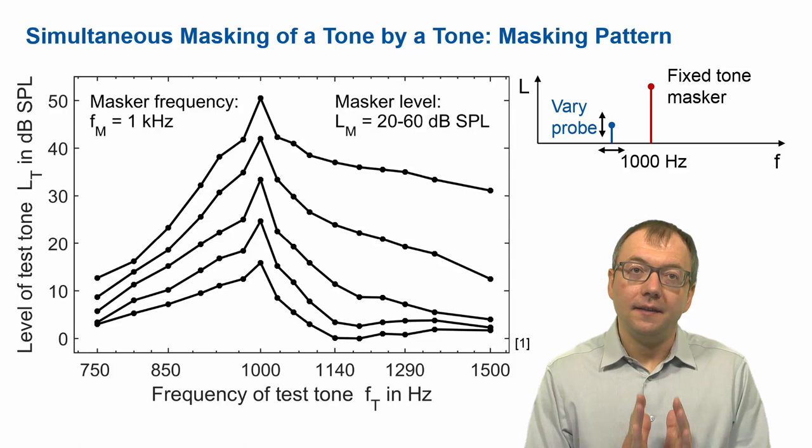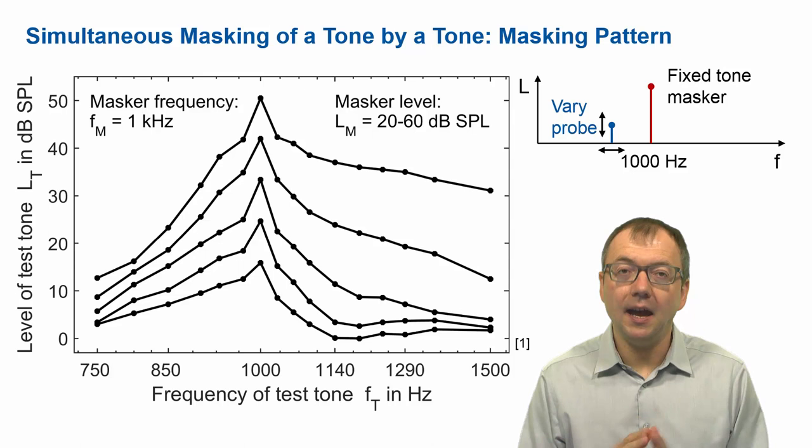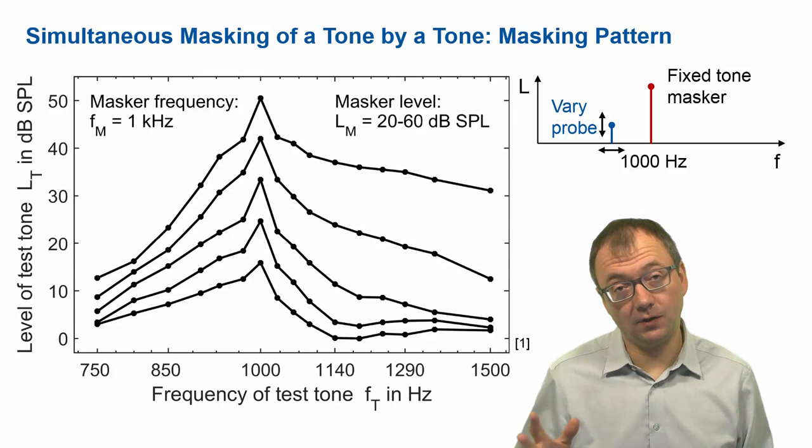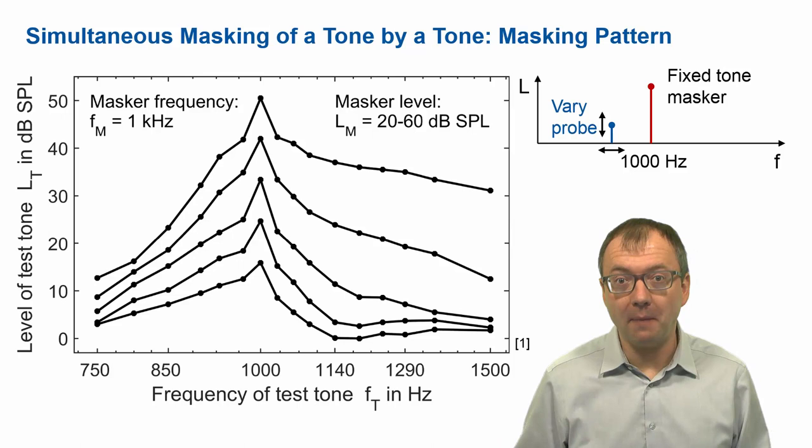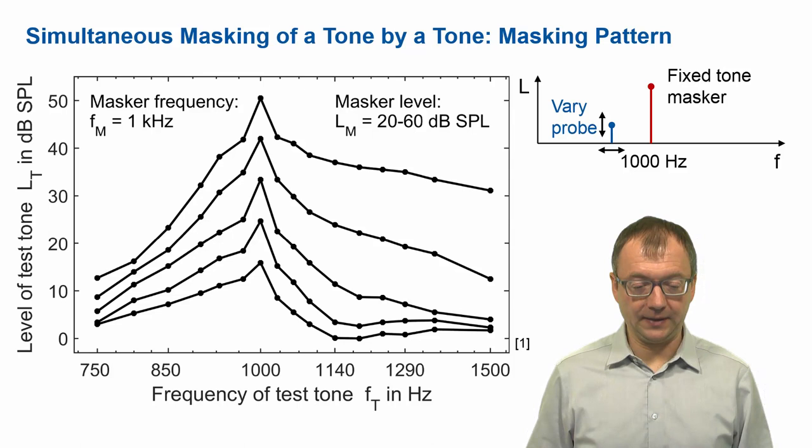You already see that masking is most strongly near the masker tone's frequency, and masking decays to lower and higher frequencies. It decays much less — what we call the upward spread of masking — towards higher frequencies if the masker level is high, but it decays more strongly at low frequencies.